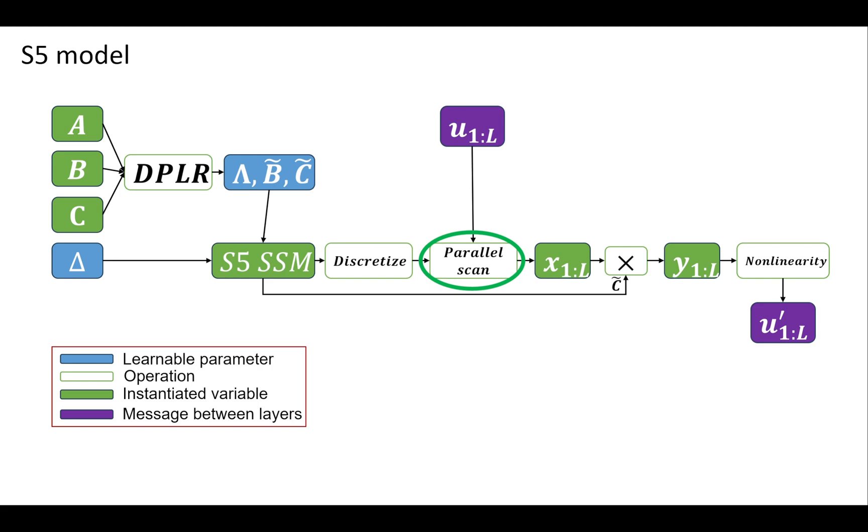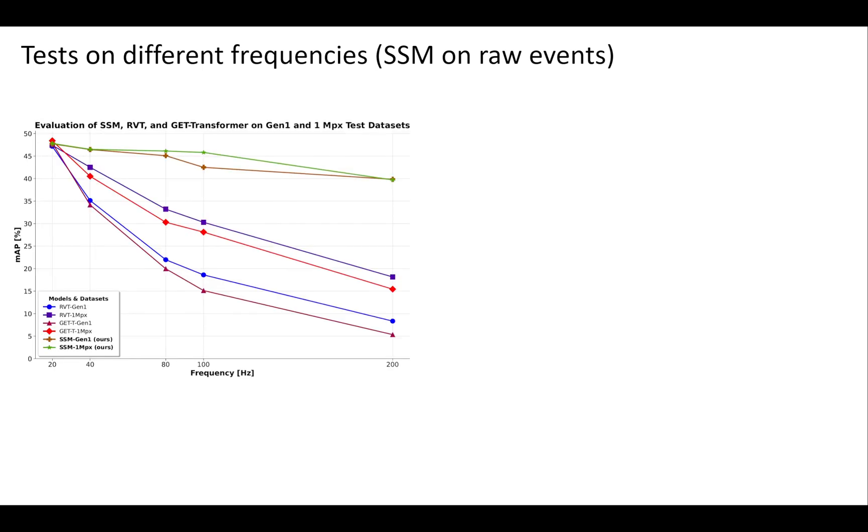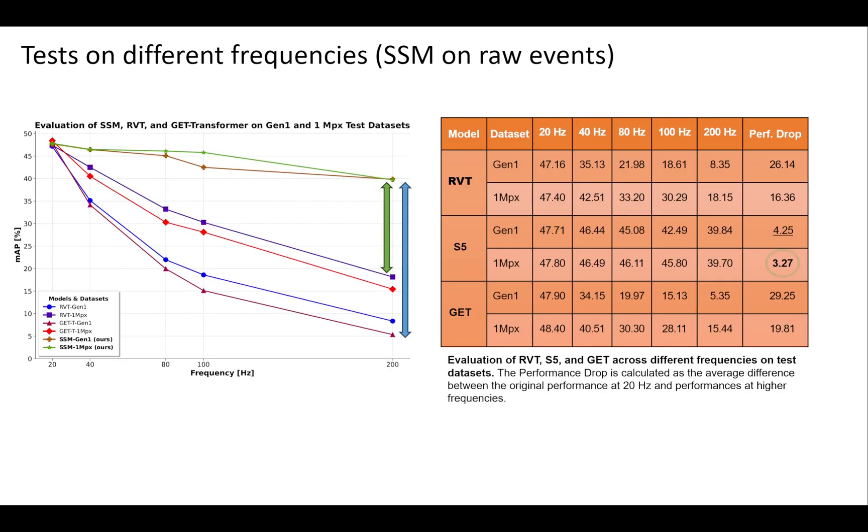Recurrence is parallelized using the parallel scan approach proposed by Blelloch in 1990. When applying SSM on raw events before converting them to event representations, we observe minimal performance drop. In contrast, recurrent transformer architectures experience a significant decline, with up to 30 mAP reduction in object detection tasks.